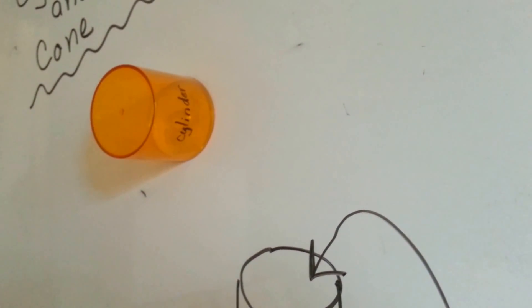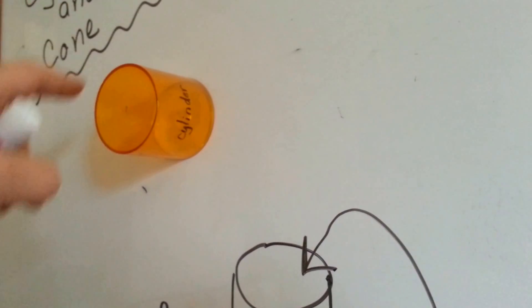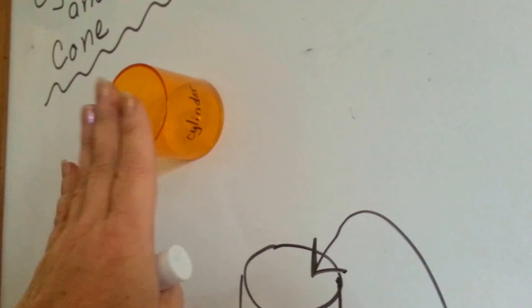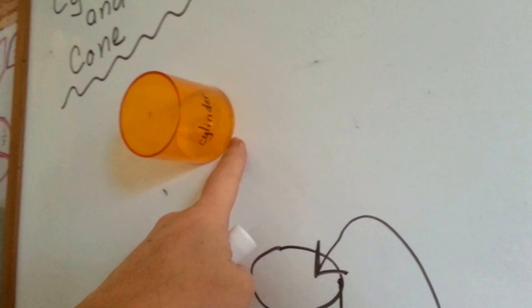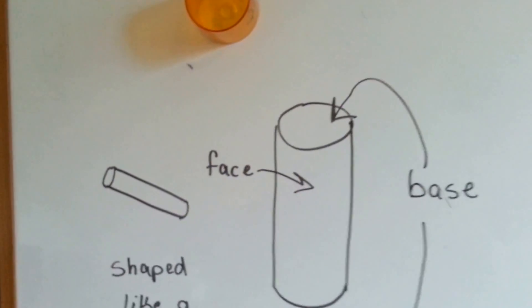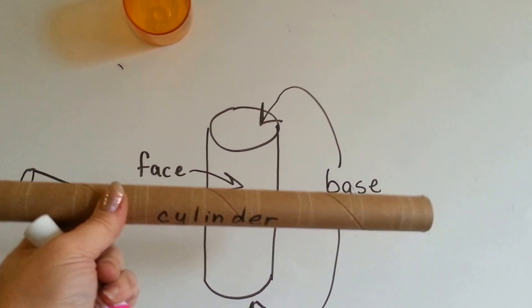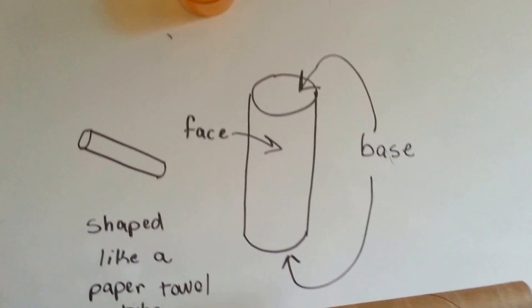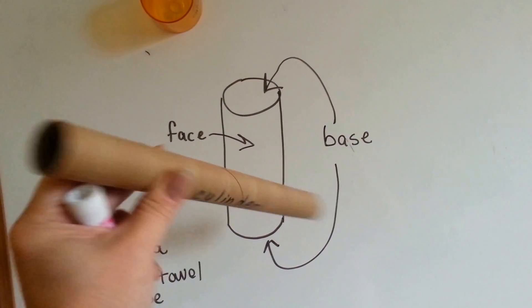Almost like the label on a can of vegetables. You could take that label off and that would be the face of the cylinder. And then this part and the part that I've got stuck to the board are the bases. Did you know that a cardboard tube from a paper towel holder is also a cylinder? See? You can look right through there.